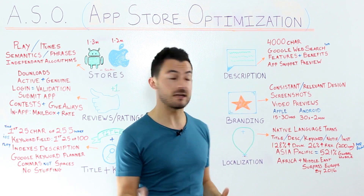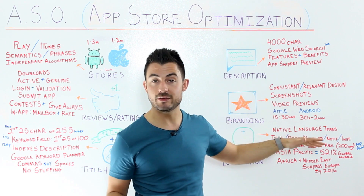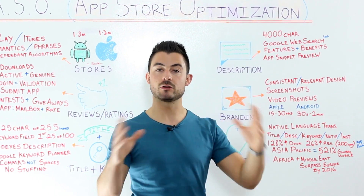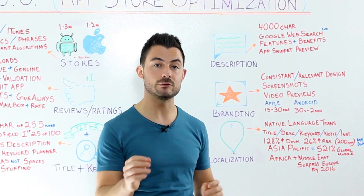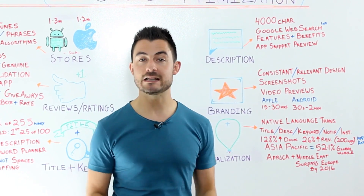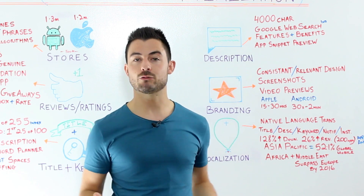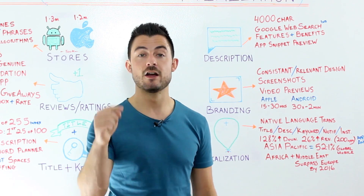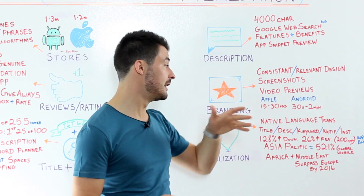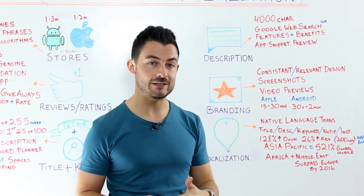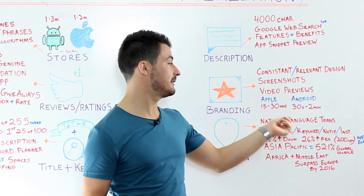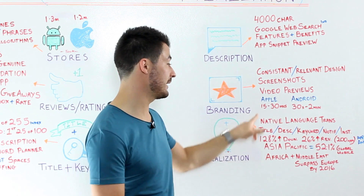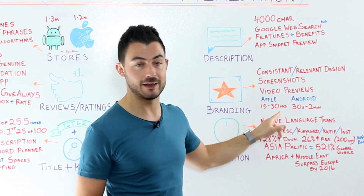Video is becoming huge for increasing downloads and educating users. A 15-to-20-second video is optimal, walking through the first-run experience: logging in, ease of use, and top features — communicating that the app creates value and a great experience. Apple restricts videos to between 15 and 30 seconds; Android is more lenient, allowing up to two minutes, but 20 seconds is really all you need. If you can't capture your value proposition in 20 seconds, two minutes probably won't help.